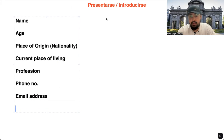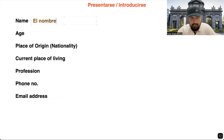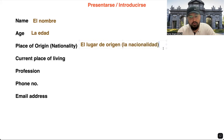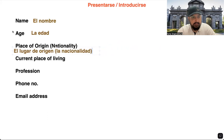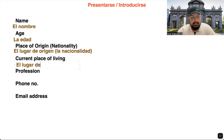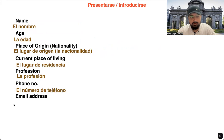There are five or six basic sentences you need to memorize. Let me write these words in Spanish: el nombre — name, la edad — age, el lugar de origen — place of origin, la nacionalidad — nationality. You need not focus too much, it is just for reference. Then el lugar de residencia — place of residence, la profesión — profession, el número de teléfono — telephone number, el correo electrónico — email address.